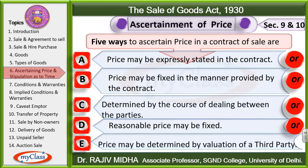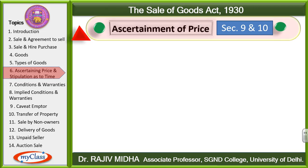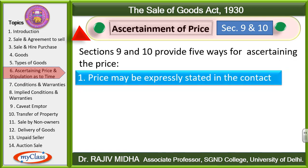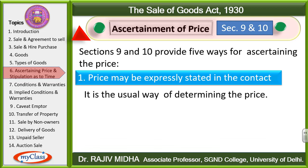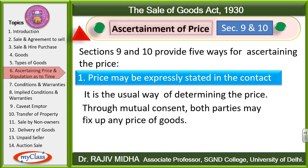Price may be expressly stated in the contract — either in written words or in spoken words. This is the usual way of determining the price. By mutual consent of both parties, they may fix any price of goods. The parties can fix the price overtly, but it must be certain.